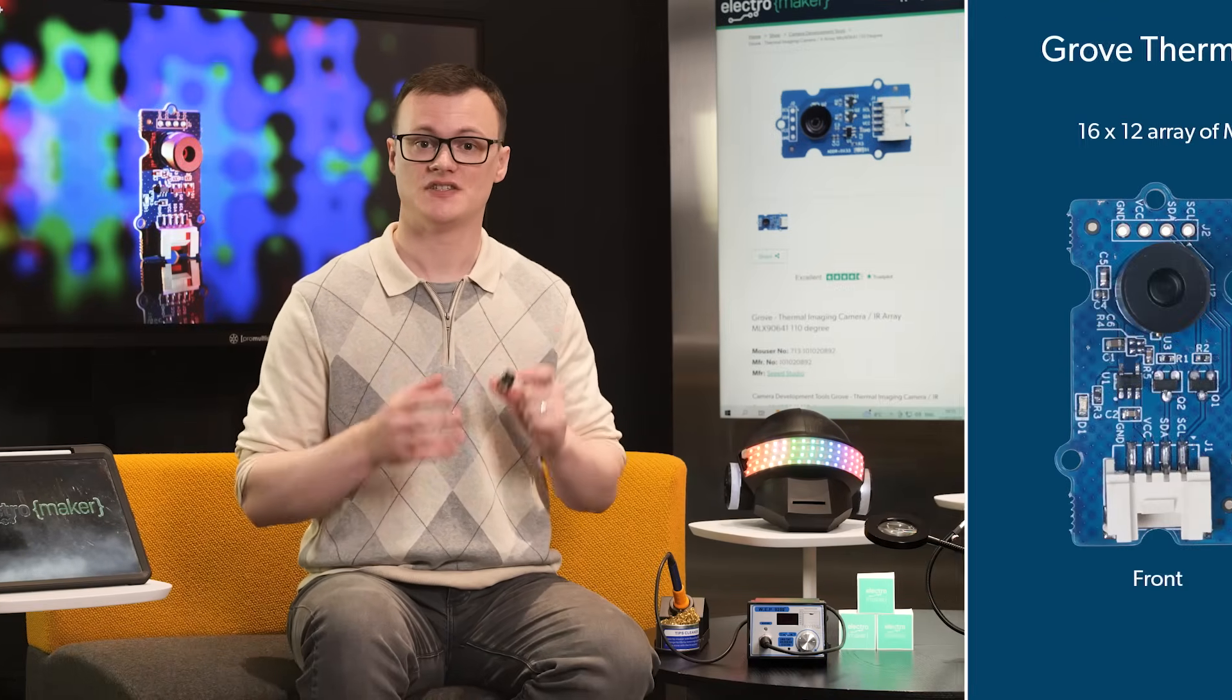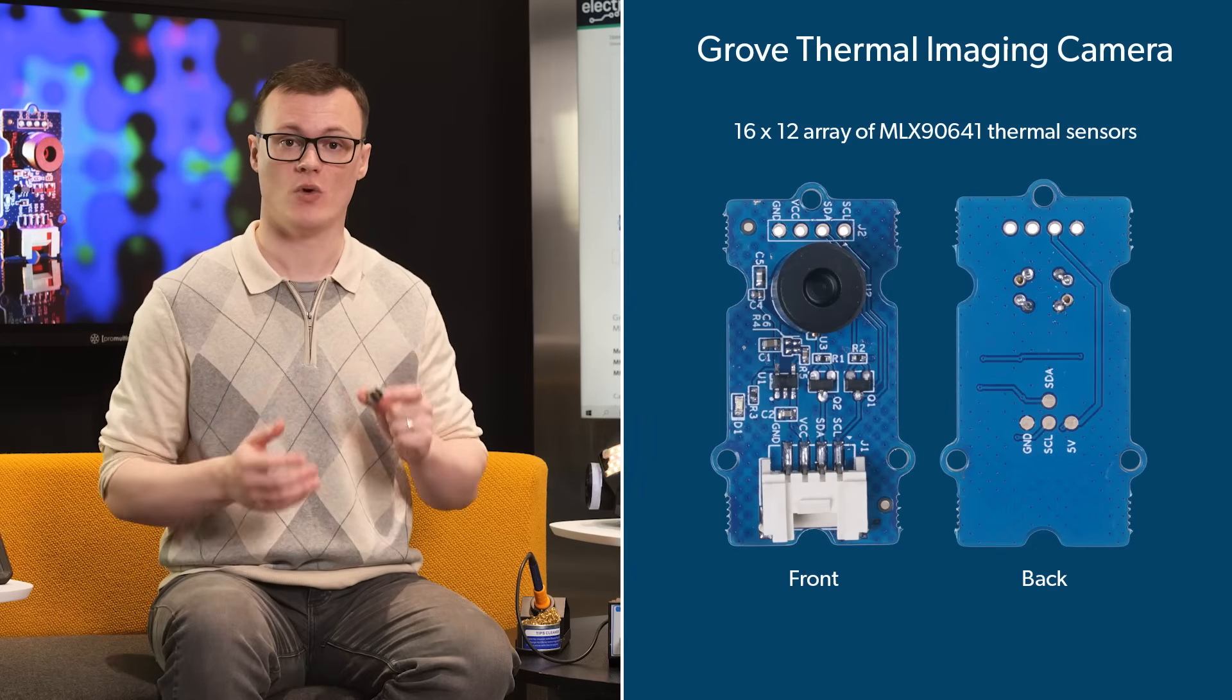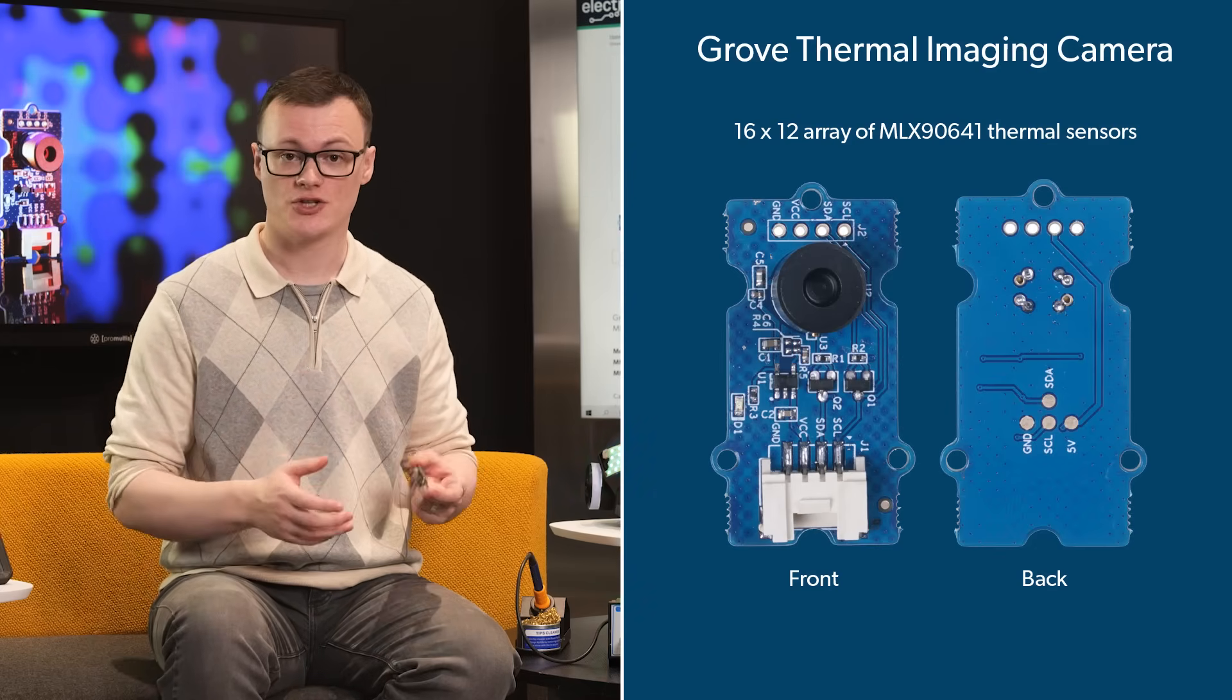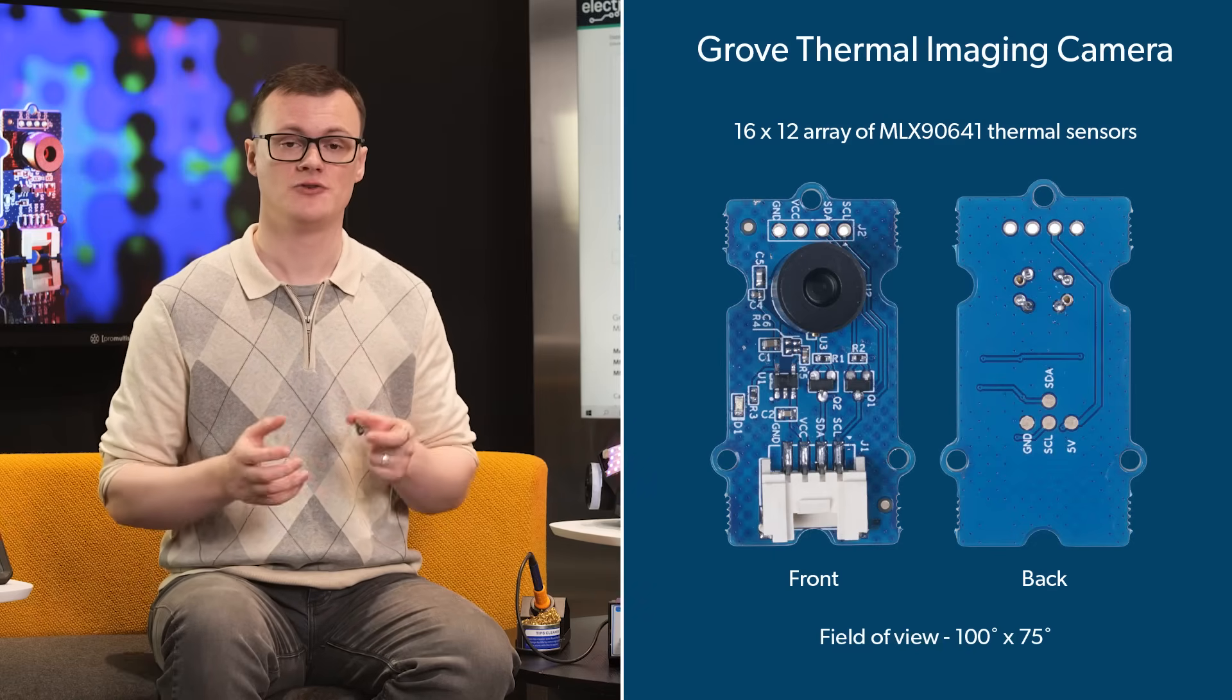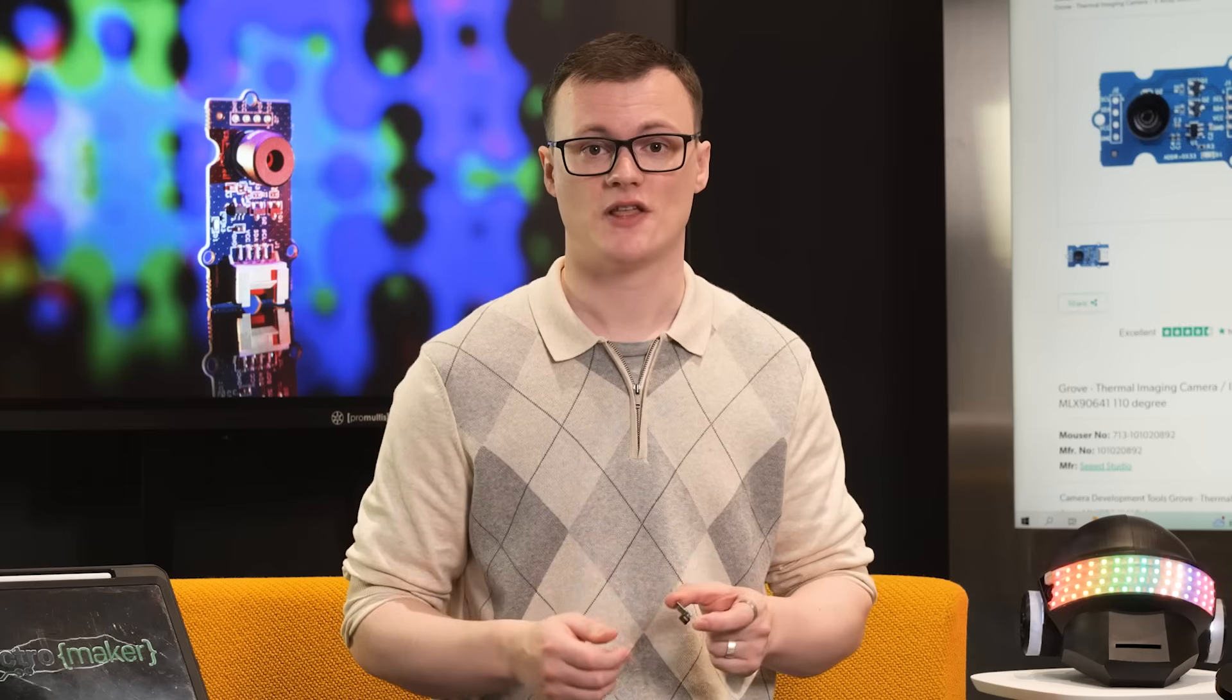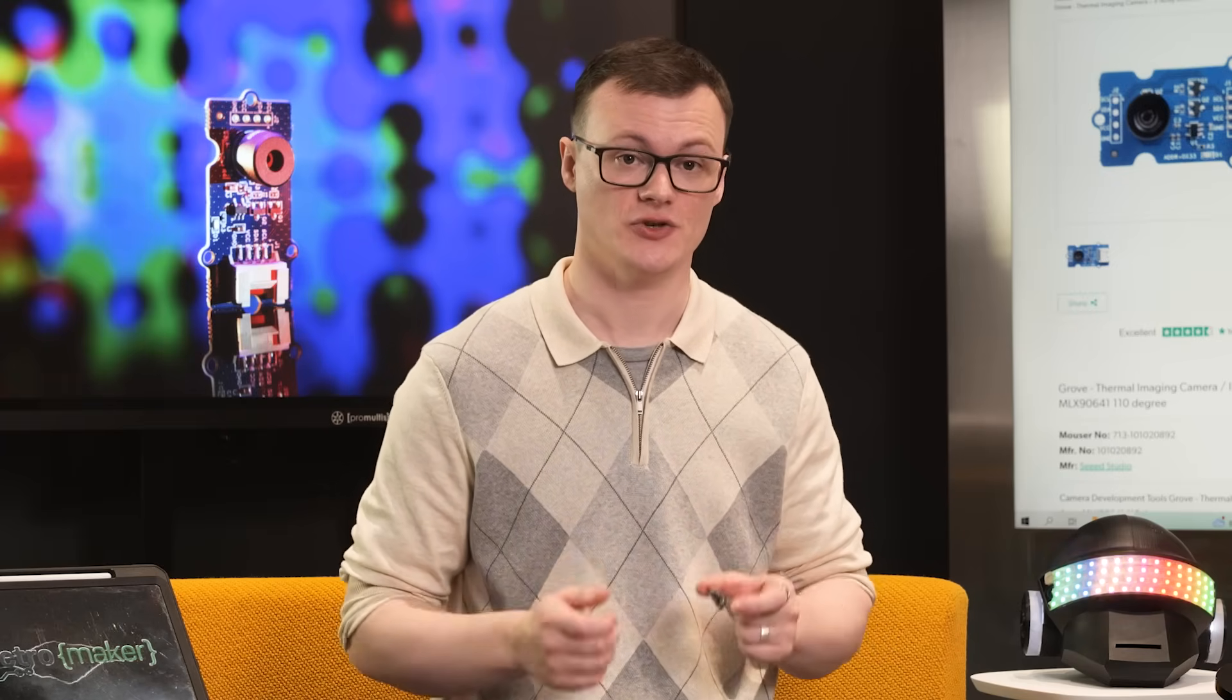With regards to the features of the Grove Thermal Imaging Camera, the camera sensor itself is a 16 by 12 array of MLX 90641 thermal sensors, which are designed for use in the medical industry. And the small plastic lens over the sensor provides a field of view of 100 by 75 degrees. The maximum temperature range that the thermal camera can detect is between minus 40 and 300 degrees Celsius, and communication with the camera is done via I2C.